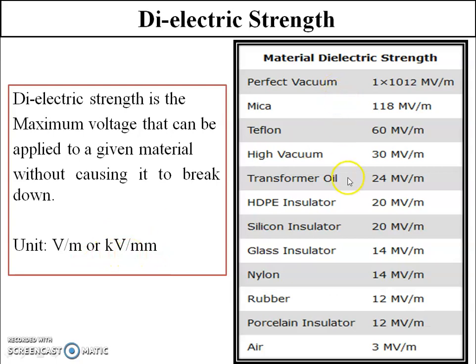Here you can see a list of dielectric strengths for respective materials. All materials on the left can be used as dielectric media. Air has a dielectric strength of 3 megavolts per meter, whereas a perfect vacuum has the highest dielectric strength of 1×10¹² megavolts per meter. To revise: dielectric strength is the strength of a dielectric — how much voltage it can withstand across it.